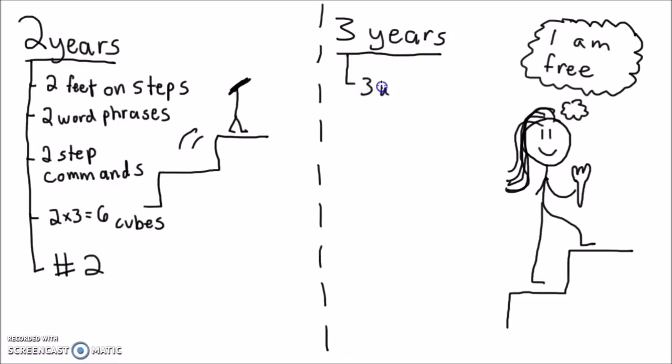They should be able to use three word sentences, be three-fourths or 75% intelligible to strangers, ride a tricycle, and say about a thousand words which has three zeros. Finally three-year olds should be able to spend the day away from their parents hence I am free which kind of rhymes with three.